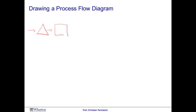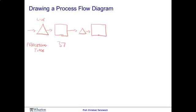Our experience at Subway starts with a waiting line. Triangles represent wherever there are waiting lines or inventory. Boxes capture activities. The processing time at the first box is 37 seconds per unit. The work is then handed off to the next worker — which might include some delay, shown by a little triangle — where there are another 46 seconds of work. From there, potentially another wait before hitting checkout, and a third station with 37 seconds per unit.